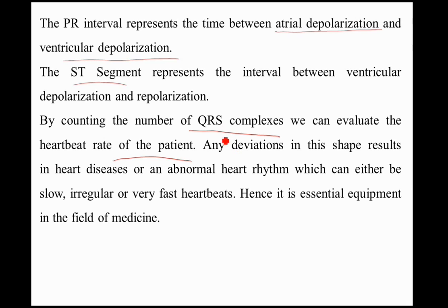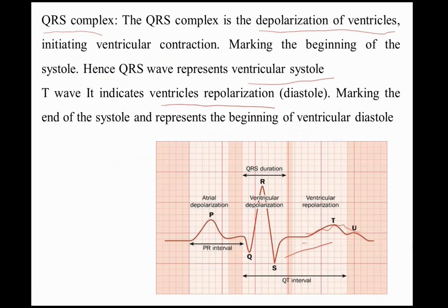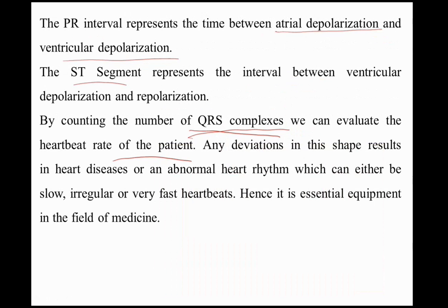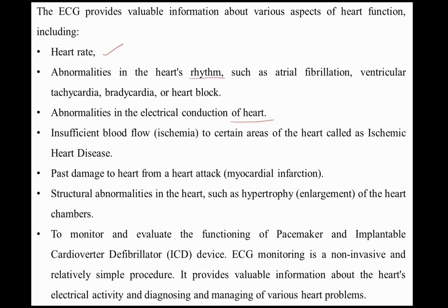By counting the number of QRS complexes during the systole and diastole cycle, we can evaluate the heartbeat rate of the patient. Any deviation in the shape results in heart disease or abnormalities of heart rhythm, which can either be slow, fast, or irregular. Under those conditions, essential equipment in the field of medicine is required.